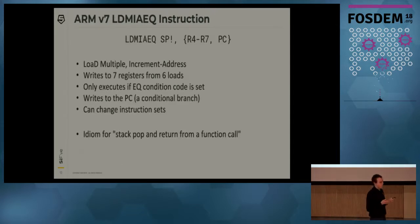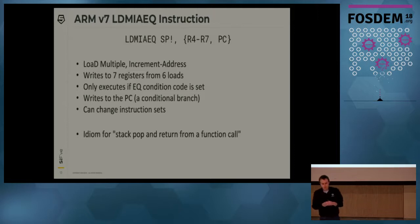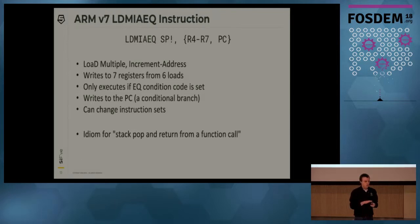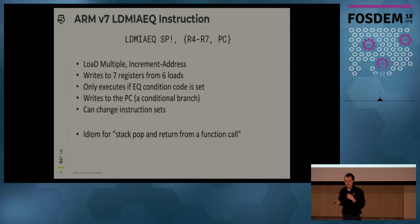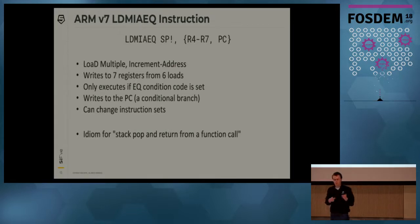The next option is ARM, which stands for the Acorn RISC Machine — so it's probably pretty simple. But let's look at the LDMIAEQ instruction. It loads multiple memory addresses from the stack, increments another address, writing to seven registers, reading six from memory. It's conditional, so it only executes if the equality condition code is set. It can write to the PC because on ARM the PC is an addressable register, meaning it can change control flow — effectively a conditional branch along with a bunch of loads.